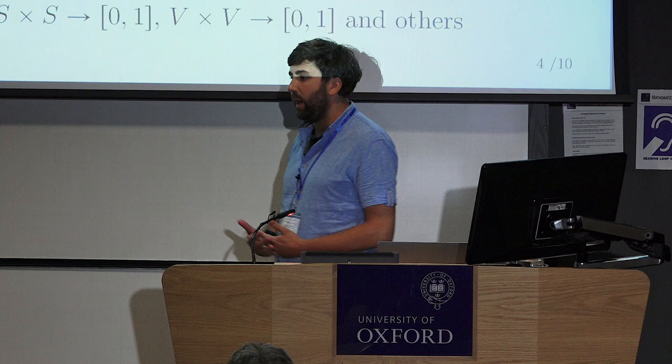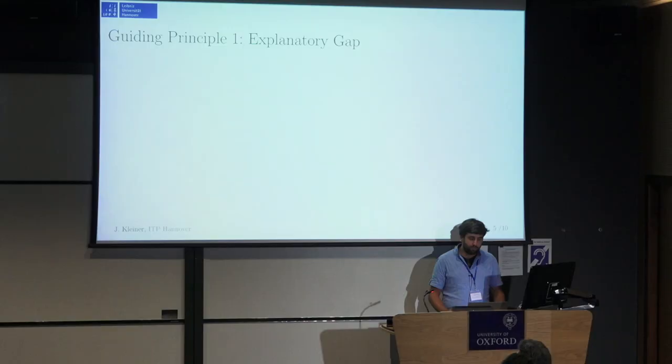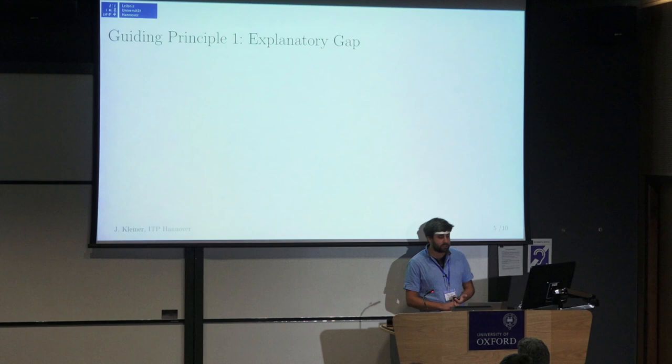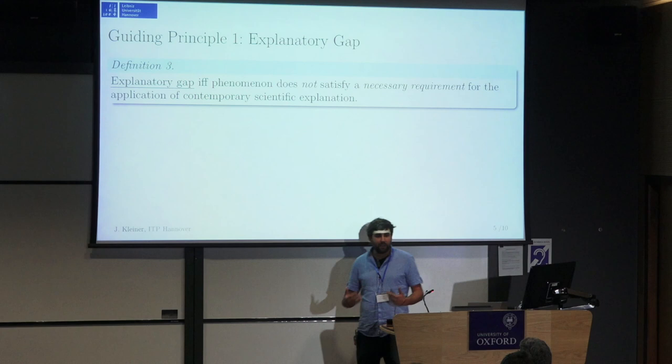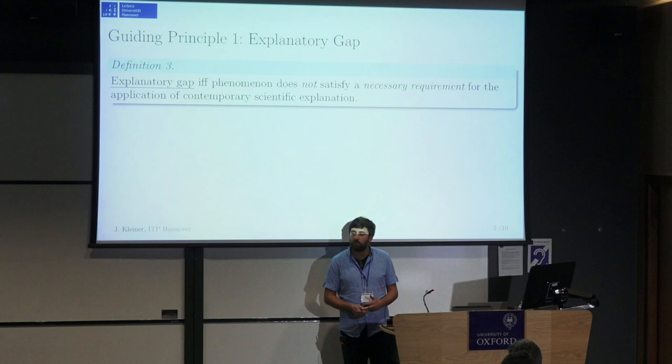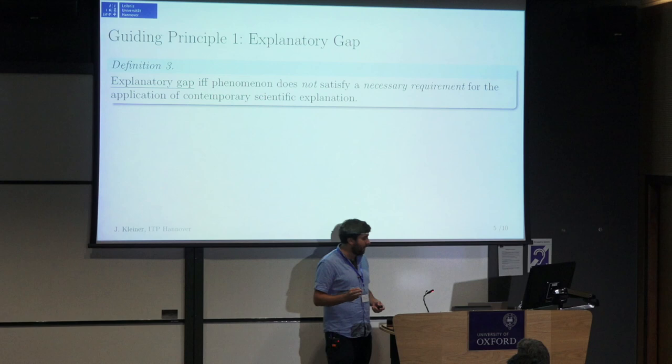The goal of my talk is to develop a more systematic way of doing that. I will be using two guiding principles. The first is the guiding principle of the explanatory gap. There is an explanatory gap between some phenomenon and the contemporary method of explanation used in science if and only if this phenomenon does not satisfy a necessary requirement for the application of that notion of explanation. In other words, if I'm studying a phenomenon which I do not know how to apply the notions of explanation we have in science, then there's an explanatory gap — and that implies we need to find a new way of approaching this phenomenon.